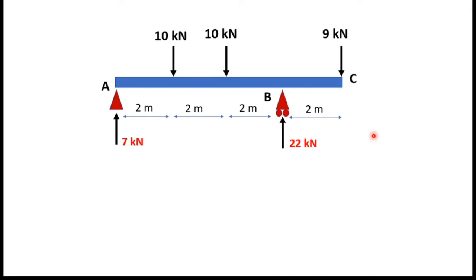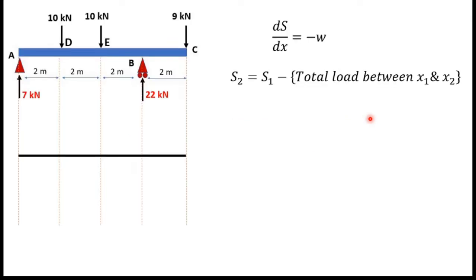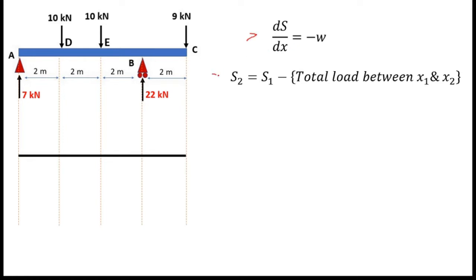This is the beam. There are three point loads and two supports, support reactions are given, and all the dimensions are given in this picture. First I am going to draw the shear force diagram for this beam. For the shear force diagram I will use these two relationships.